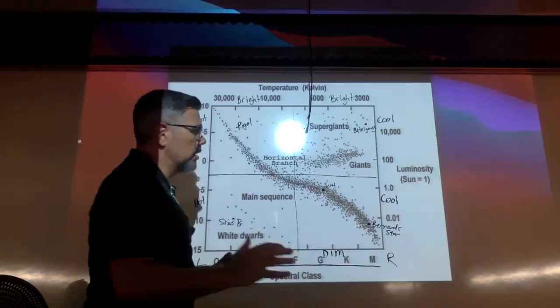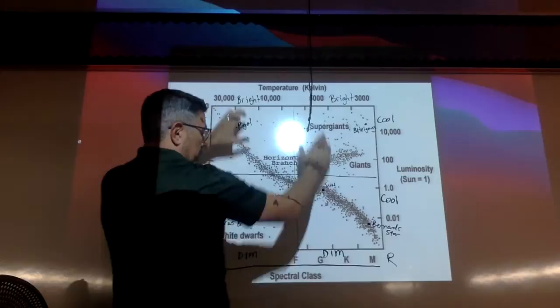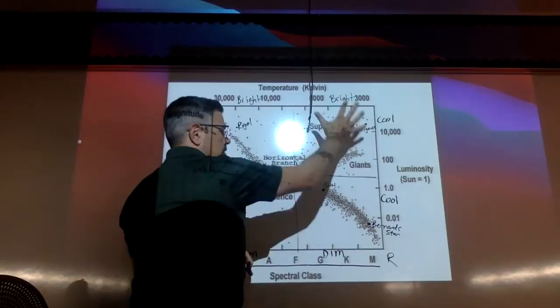So when you know that, you could break this whole thing up into quadrants. So four sections, and I already drew your lines there, okay? So we know that the top is bright and the bottom is dim. We know that the right side of the HR diagram is where your cooler stars are, and the left side is where your hotter stars are.